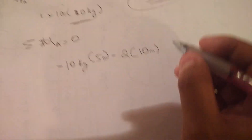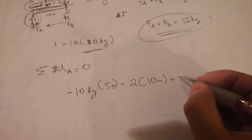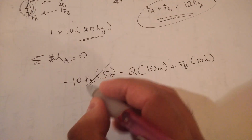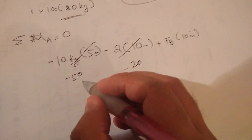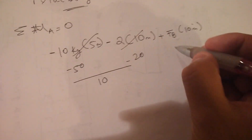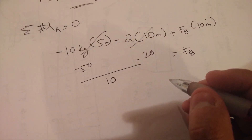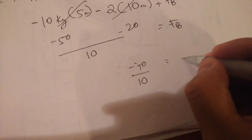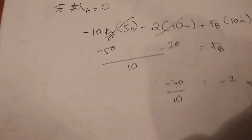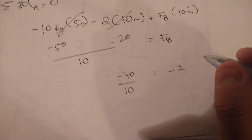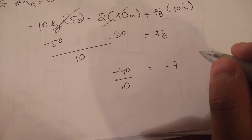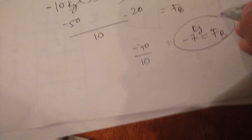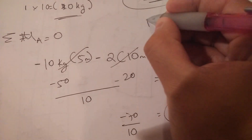Then subtract the 2 kilograms times the full distance of 10 meters, and add FB times 10 meters. Solving: negative 50 minus 20 equals minus 70, divided by 10, gives FB equals 7 kilograms (negative sign indicates direction). That is your force at B in kilograms.